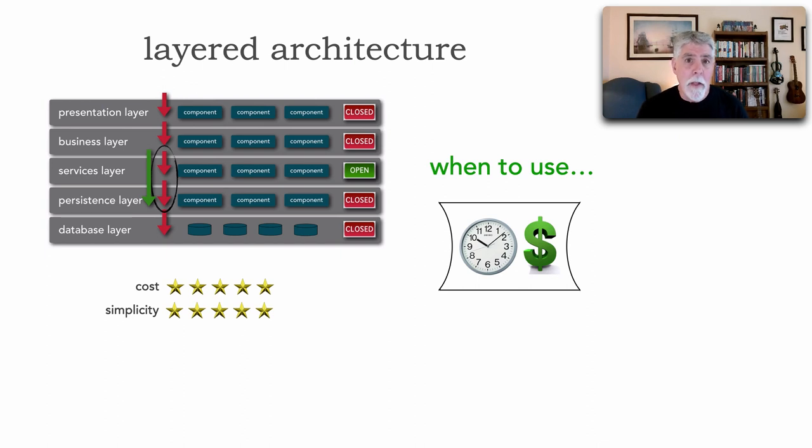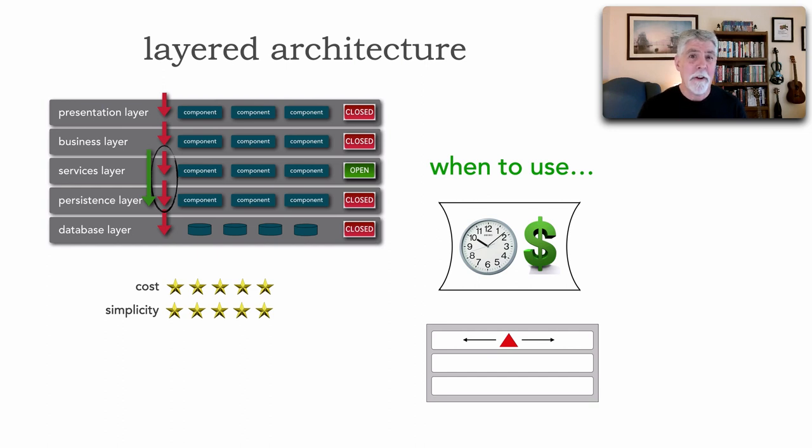Another good use of the layered architecture is when we expect most of our changes to be technical in nature. For example, we make changes to the user interface all the time, we're constantly changing our UI, but the back-end components remain the same. Or maybe it's our user interface that remains consistent and we're constantly changing our business rules, or maybe we're just constantly changing the data but the business rules and the user interface stay the same.